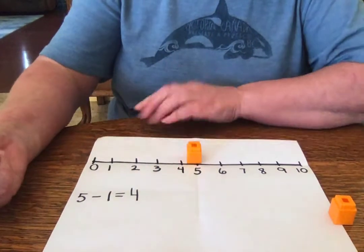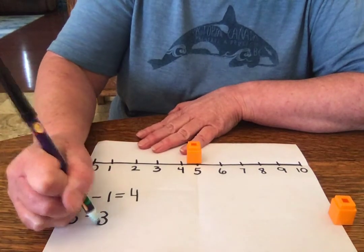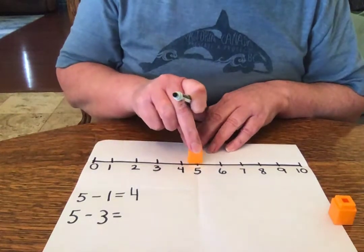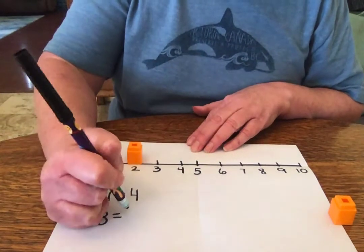What if I start with 5 and I subtract 3? Okay, start at 5. Now you have to jump 3. 1, 2, 3. Who do I land on? I land on 2.